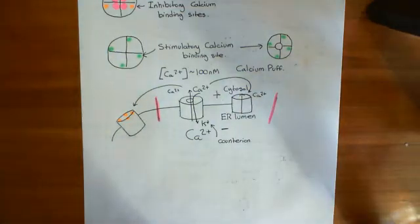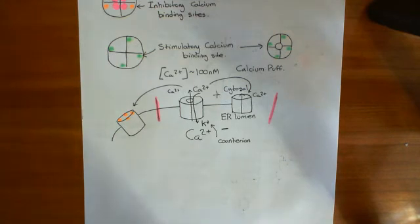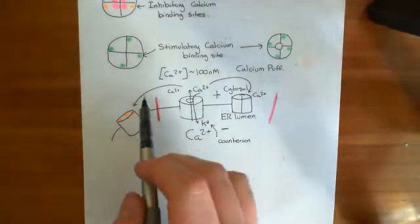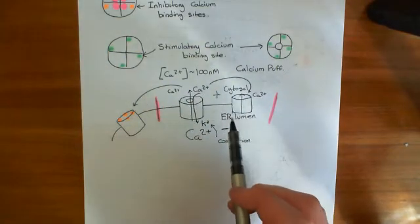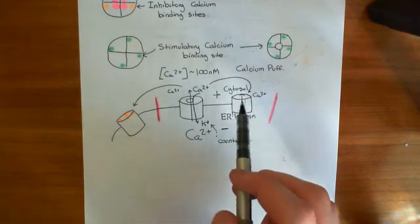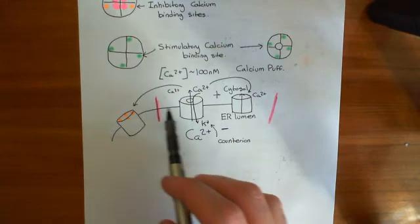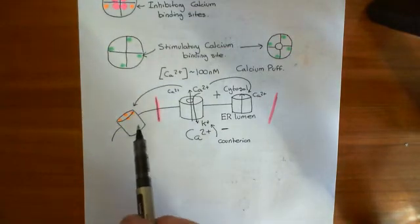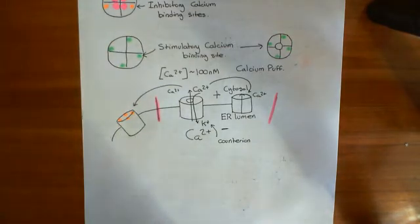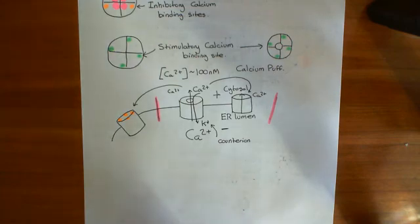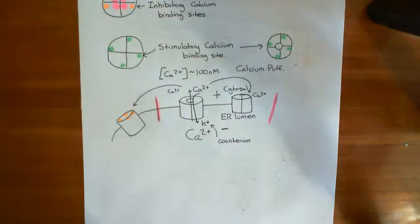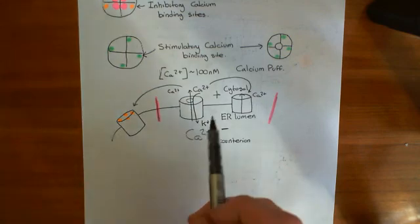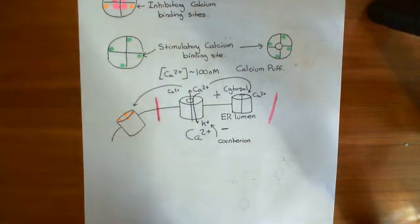In summary: a local stimulation of the GQ pathway causes IP3 to rise locally; IP3 receptors primed by IP3 release calcium and positively feed back onto each other, while laterally inhibiting surrounding unprimed IP3 receptors. This produces a calcium puff — not a calcium blip (which involves just a single IP3 receptor) and not a calcium wave, which requires entire-cell activation of the GQ pathway.